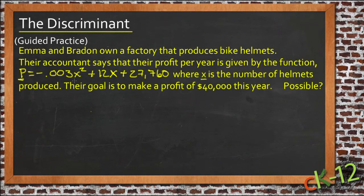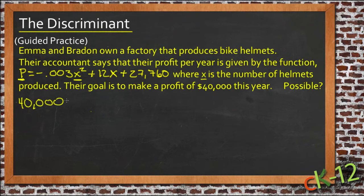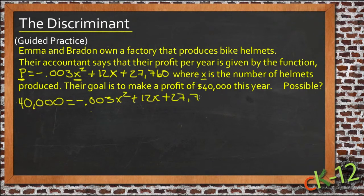What we're looking for is to find how many helmets they'd have to make — x — so that their profit, p, was $40,000. So we can write this out as $40,000 equals negative 0.003x squared plus 12x plus 27,760, and if we solve this for x, then we know how many helmets it would take to make that profit.